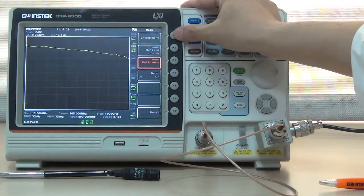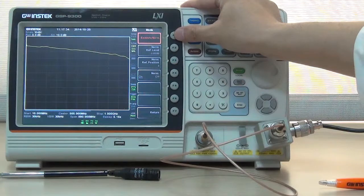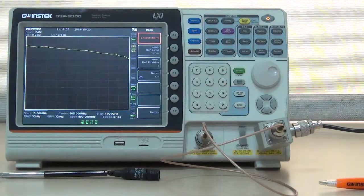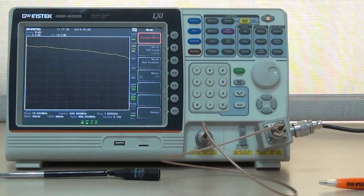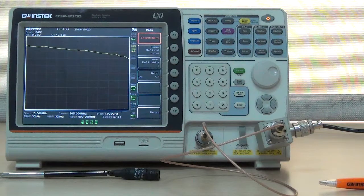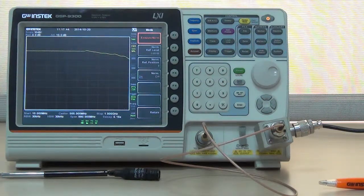Press F1 to execute normalization. After completing normalization, connect antenna component to conduct scalar network analysis test.